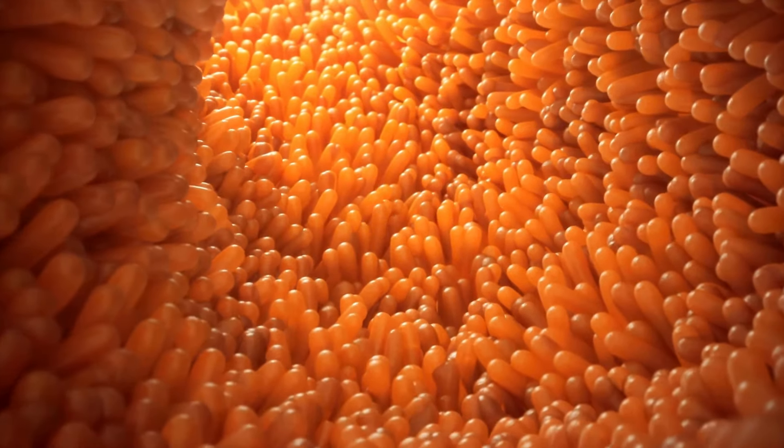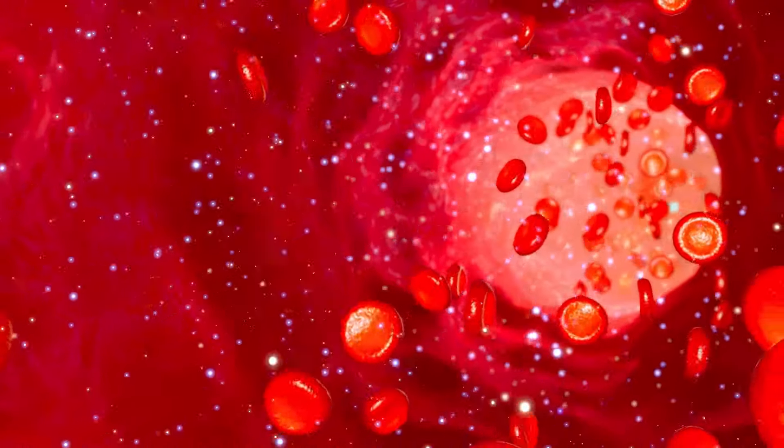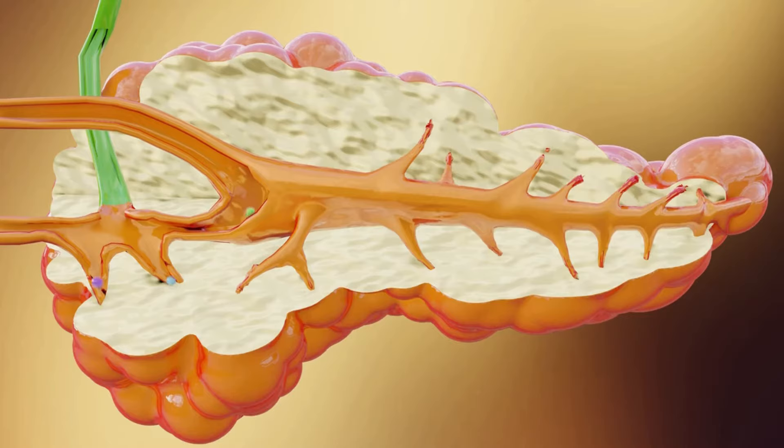From the digestive system, glucose gets absorbed into the blood. As a result of increased blood glucose levels, the beta cells of the pancreas secrete a hormone called insulin.